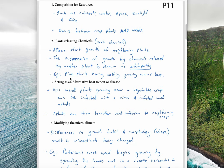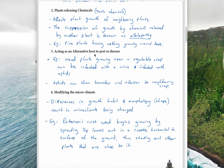An example of allelopathy is pine plants having nothing growing around their base. If you've seen pine trees growing, there's often a perfect circle around the base of the tree where grass just won't grow. This is because the pine plant is releasing chemicals to out-compete other plants, and it does this quite successfully. That is known as allelopathy.